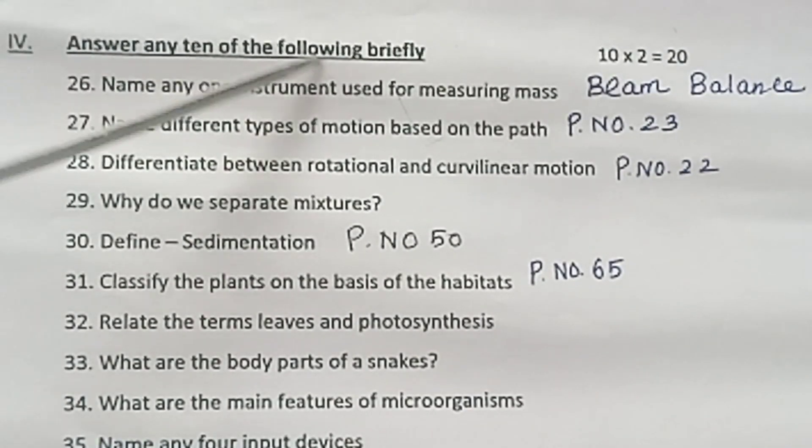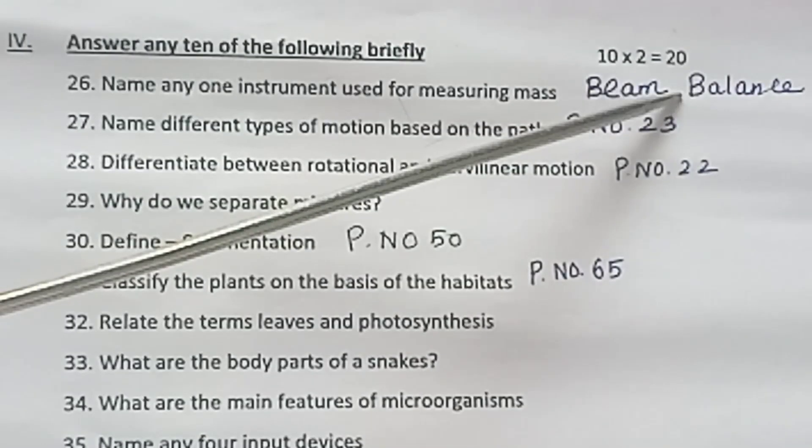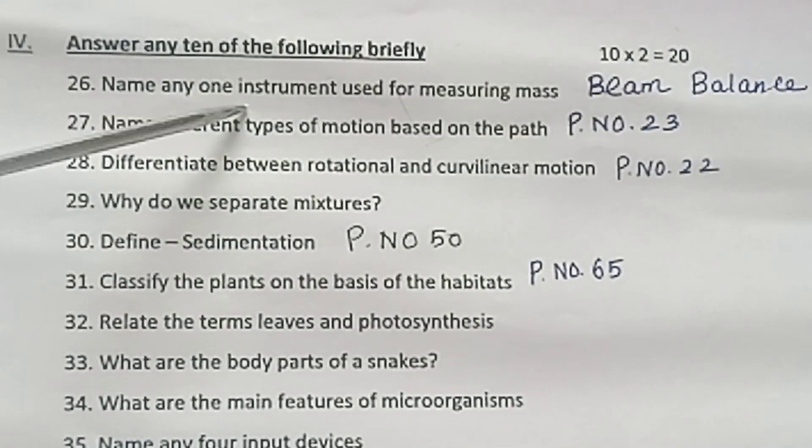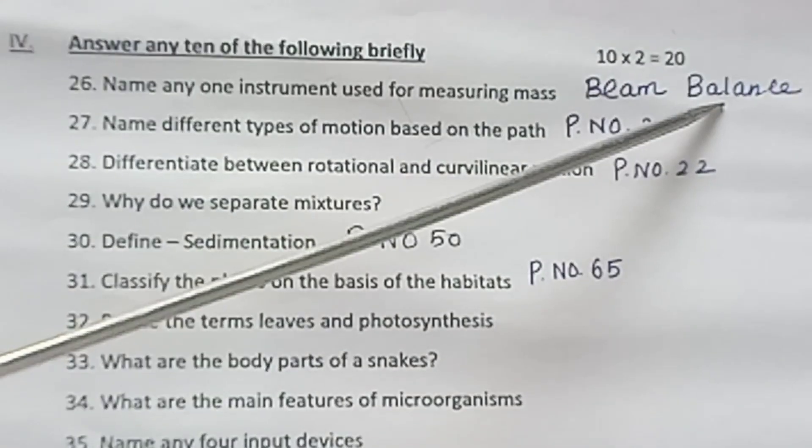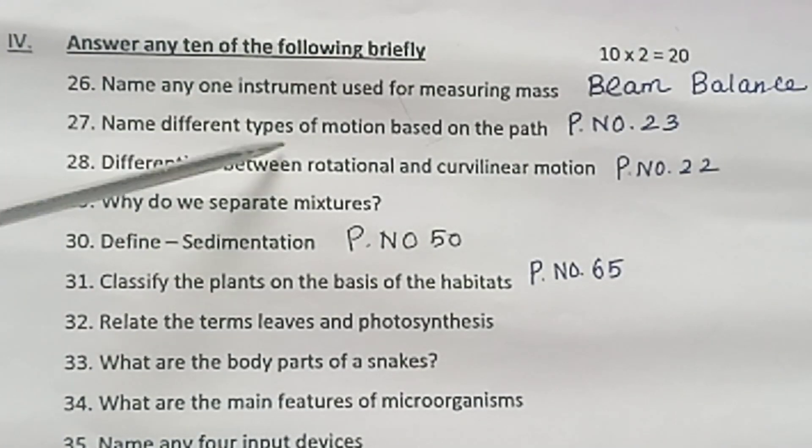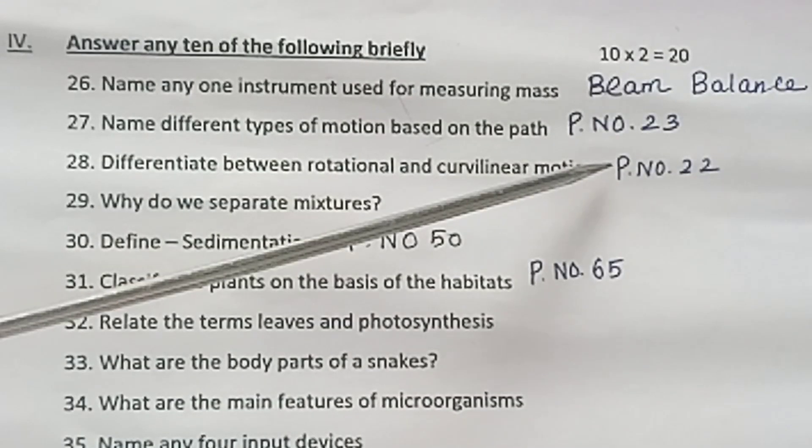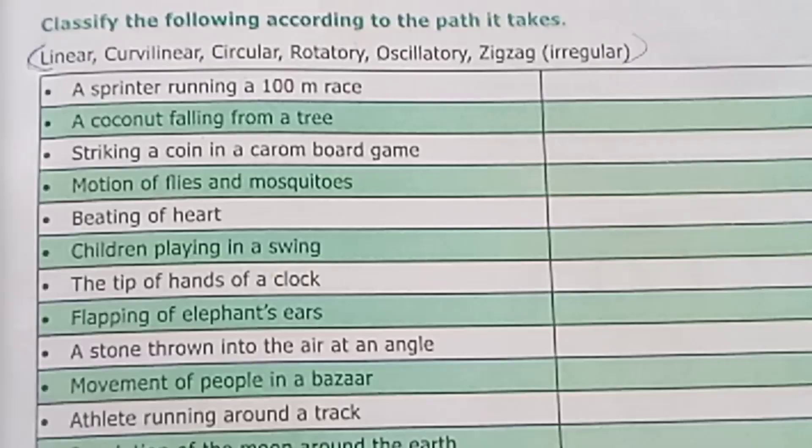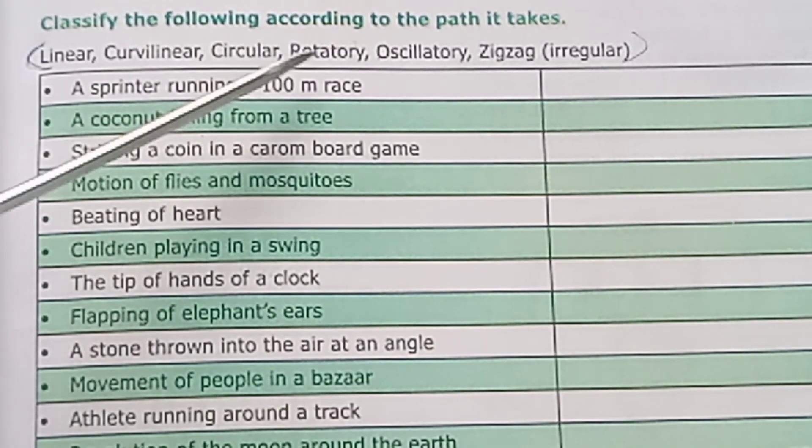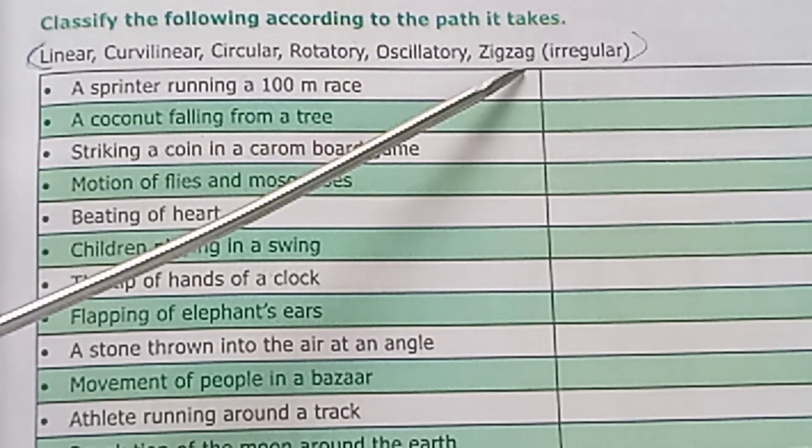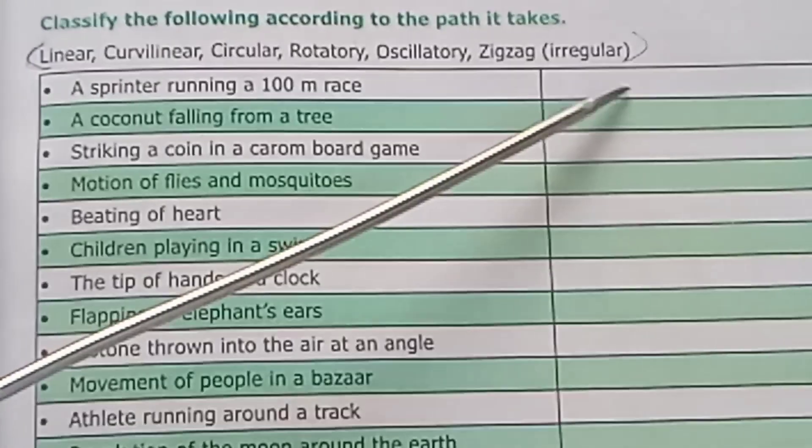Numeration 5. Answer any 10 of the following briefly. 10 into 2 is equal to 20. Name any one instrument used for measuring mass - Beam balance. Name different types of motion based on path. Page number 23: Linear, curvilinear, circular, rotatory, oscillatory, zigzag, otherwise irregular motion.